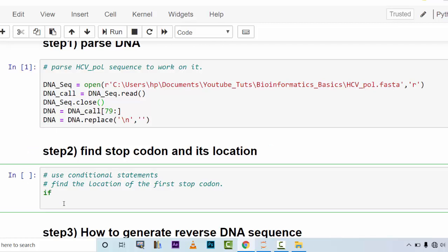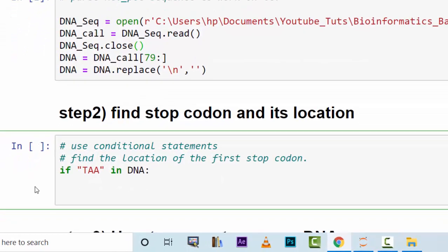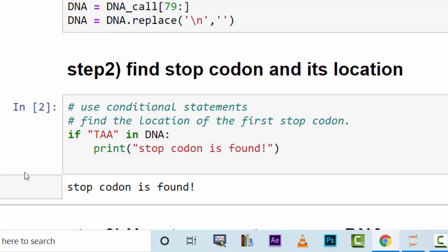So you could say if TAA in DNA, if this is true, this is how you write the condition, then do something. You can print out stop codon is found. If it's found, it tells you that it is found.